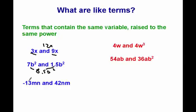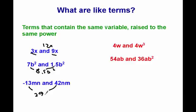Now if I look at these two, I have negative 13mn and 42nm. Realize that what is implied here is that these are being multiplied — this is m times n, and this is n times m. Are these like terms? Well, they both have the same variables, m and n, and they're all to the same power: m to the first and n to the first. So they are like terms — it doesn't matter what order the variables are in. Combining them: negative 13 plus 42 gives me 29mn, or 29nm — whichever way you want to write it. These both mean the same thing.